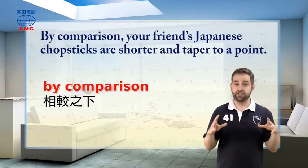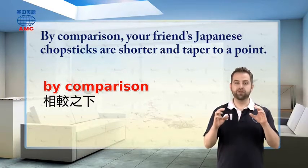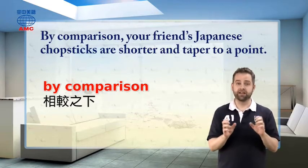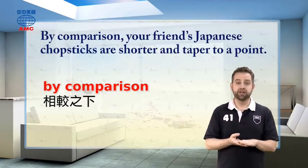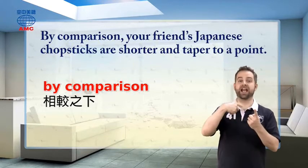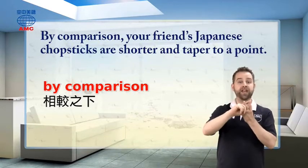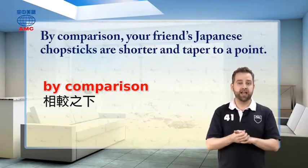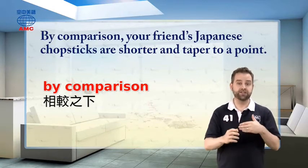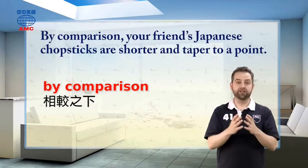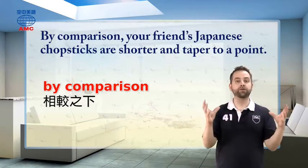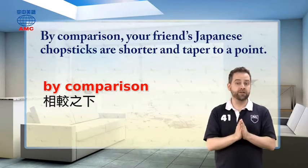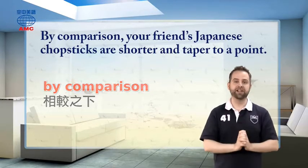A transition phrase is something you use to connect ideas and sentences together when you're writing. For example, 'in addition to' adds details; 'however' provides a contrast; 'to sum up' is a transition phrase used for ending your article and pulling all your points together. There are lots of different transition phrases, and if you learn how to use them, your writing will improve a lot.